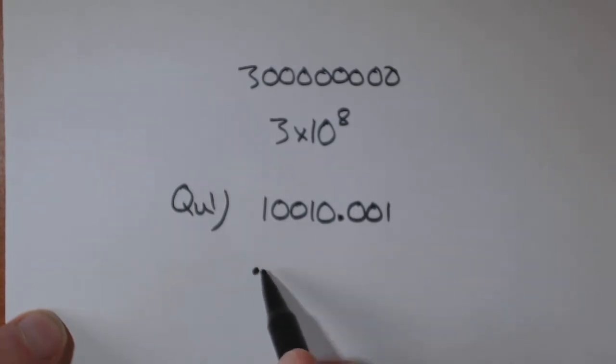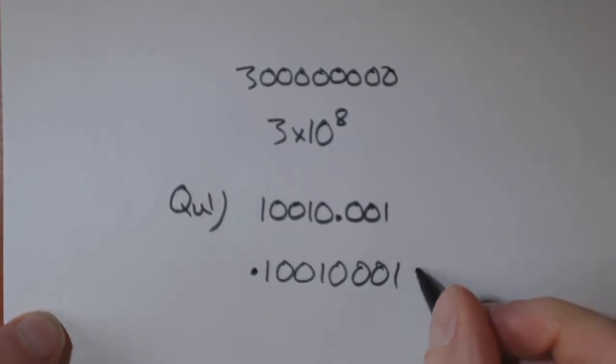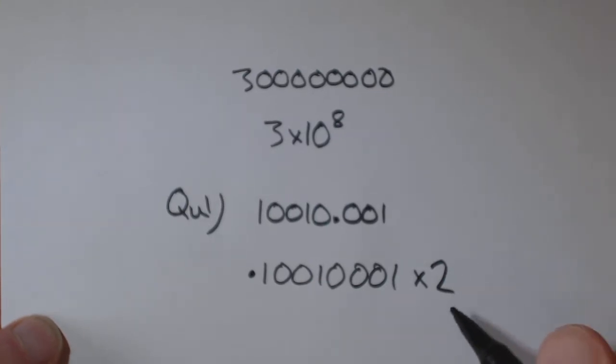So we can write this number, just ignore the point. Now we then say times 2 because it's binary, so binary base is 2, and we just write down how many numbers did it have to go past to get to the front.